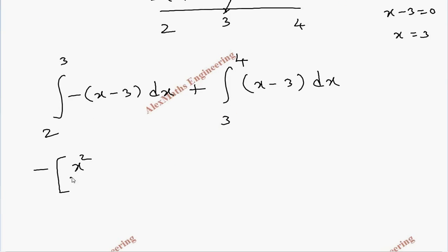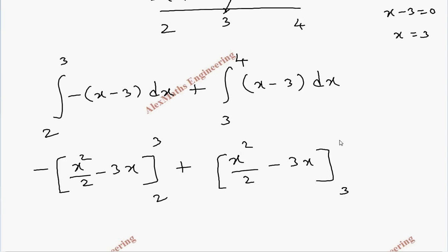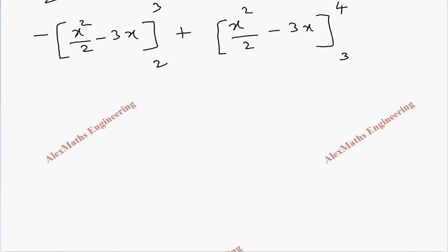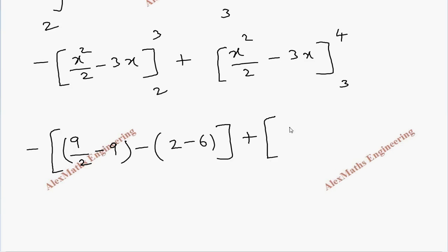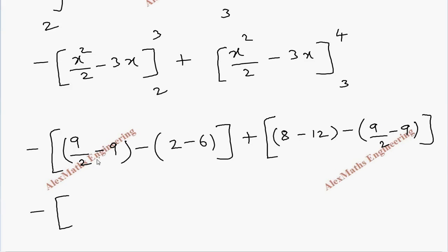Integrating both parts gives x squared by 2 minus 3x. For the first part evaluated from 2 to 3: upper limit gives 9 by 2 minus 9, lower limit gives 4 by 2 minus 6, which simplifies to minus 9 by 2 minus (2 minus 6), giving minus 1. For the second part evaluated from 3 to 4: upper limit gives 16 by 2 minus 12 equals minus 4, lower limit gives 9 by 2 minus 9.